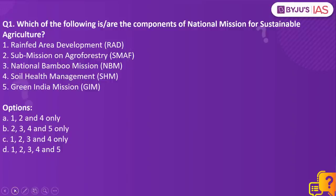Which of the following is or are the components of National Mission for Sustainable Agriculture? Number one: Rainfed Area Development. Number two: Submission on Agroforestry. Number three: National Bamboo Mission. Number four: Soil Health Management. Number five: Green India Mission.